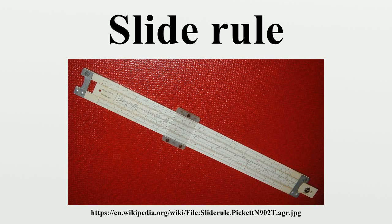A logarithm transforms the operations of multiplication and division to addition and subtraction. By moving the top scale to the right by a distance, matching the beginning of the top scale with a label on the bottom, each number at position on the top scale aligns with the number at the corresponding position on the bottom scale, giving the product. For example, to calculate three times two, the one on the top scale is moved to the two on the bottom scale. The answer, six, is read off the bottom scale where three is on the top scale. In general, the one on the top is moved to a factor on the bottom, and the answer is read off the bottom where the other factor is on the top.